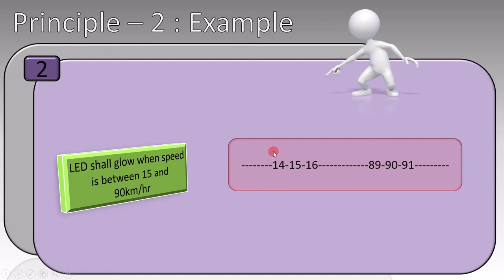On one end, we have 14, 15, 16, and on the other end, we have 89, 90, 91. So when we do the testing, the LED should not glow at 14, and on the other end, it should not glow for 90 or 91. It should only work for 16 to 89.